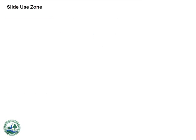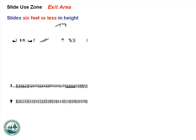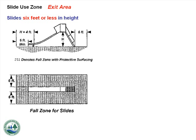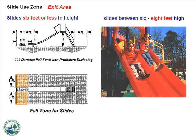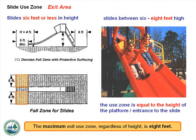Slide Use Zone: Let's examine the use zone at the bottom of the slide, or the exit area. For slides 6 feet or less in height, the use zone at the bottom of the exit area should extend a minimum of 6 feet from the end of the slide. For slides between 6 feet and 8 feet high, the use zone at the exit is equal to the height of the platform or entrance to the slide. The maximum exit use zone, regardless of height, is 8 feet.